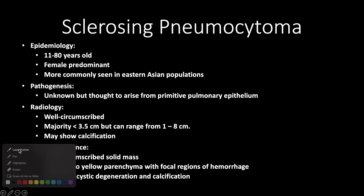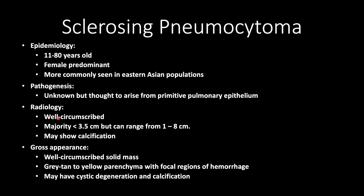Radiologically, you'll see a well-circumscribed mass, where the majority are less than 3.5 centimeters, but it can range from 1 to 8 centimeters, and it may show calcifications.